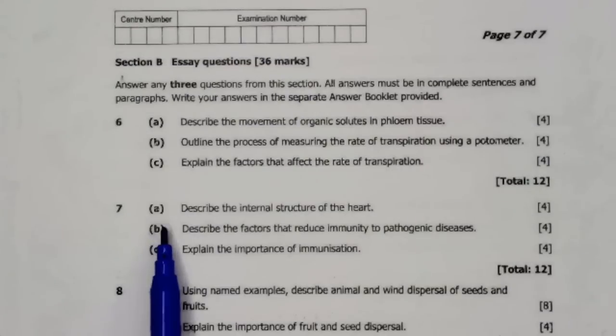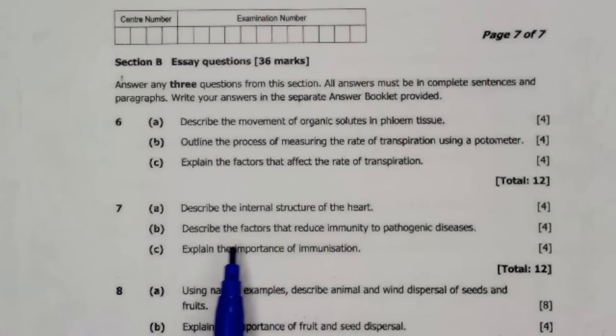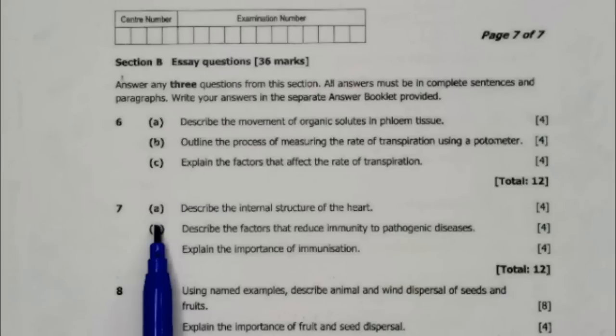Question 7A: Describe the internal structure of the heart. Part B: Describe the factors that reduce immunity to pathogenic diseases. Part C: Explain the importance of immunization.